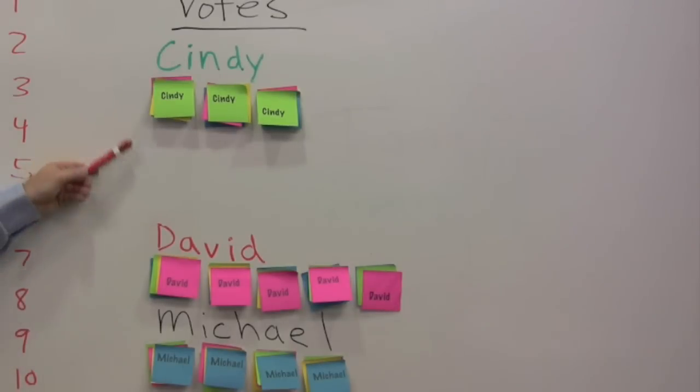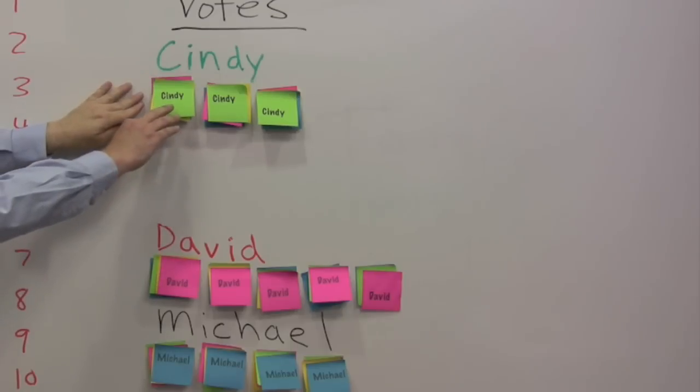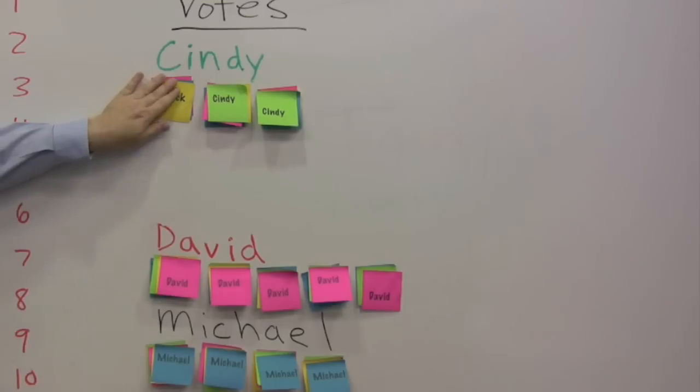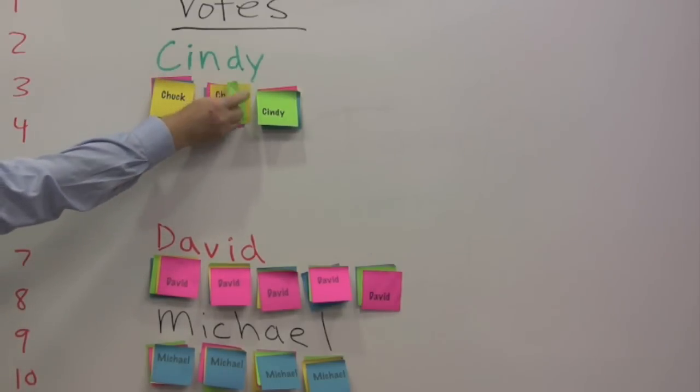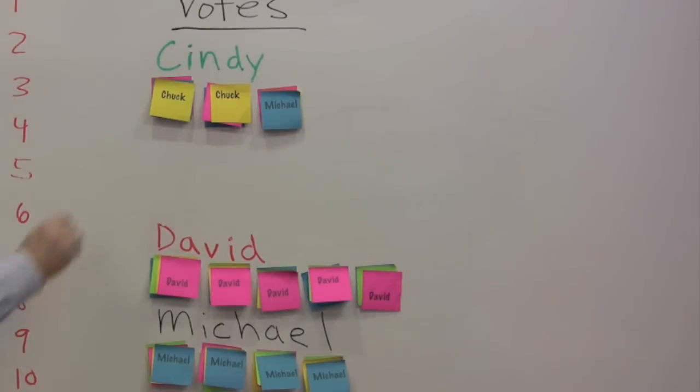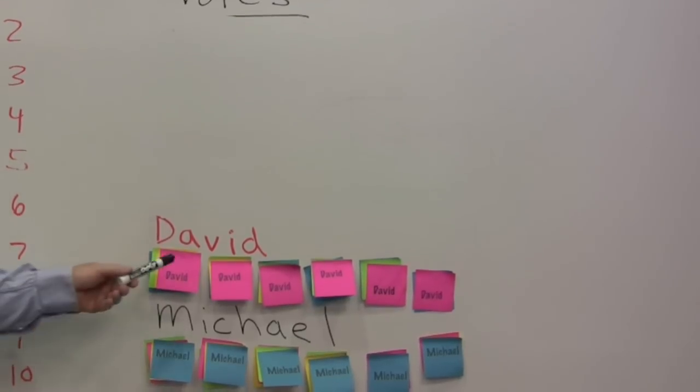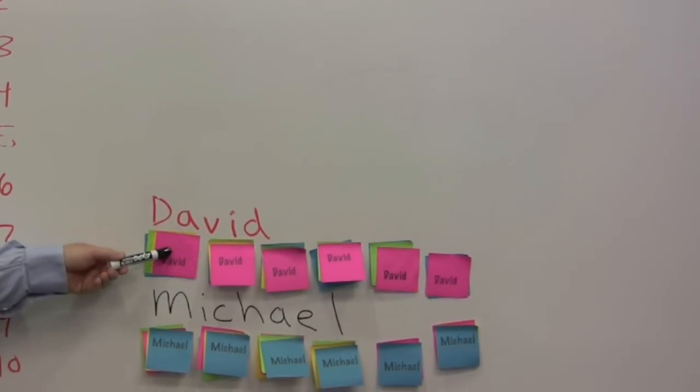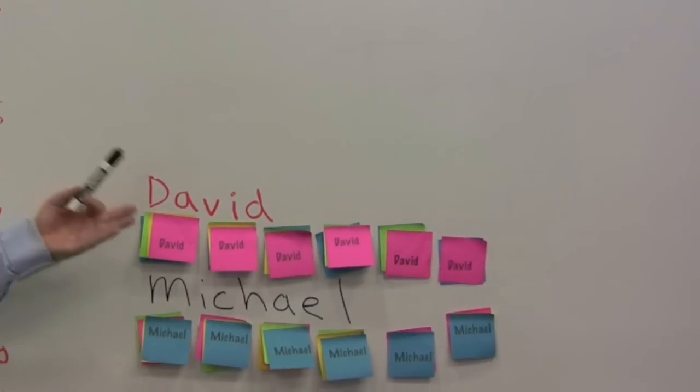After redistributing the votes, we take a look to see if anybody has a clear majority. There is none. So, we go again to the person that has the least number of votes and take a look at what the second place person would be and redistribute them. We've now redistributed the votes that were from Cindy. David has six. Michael has six. It's a tie.